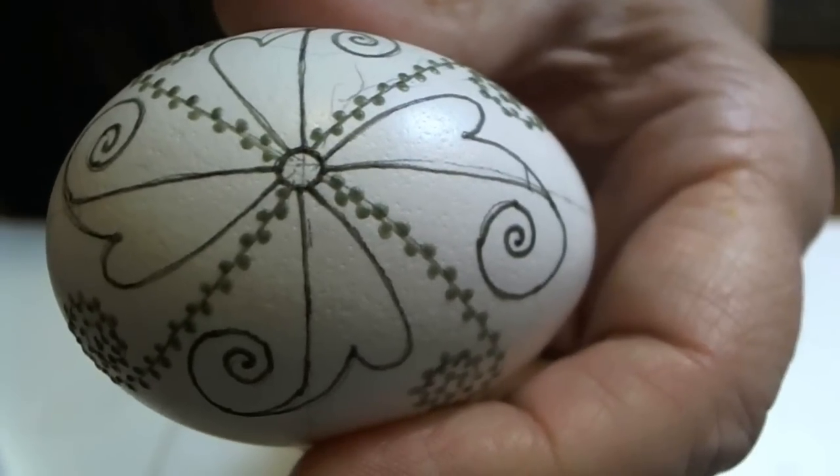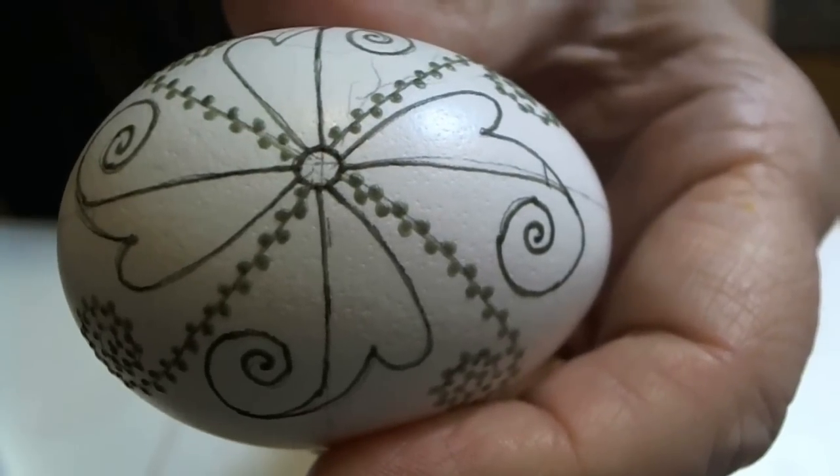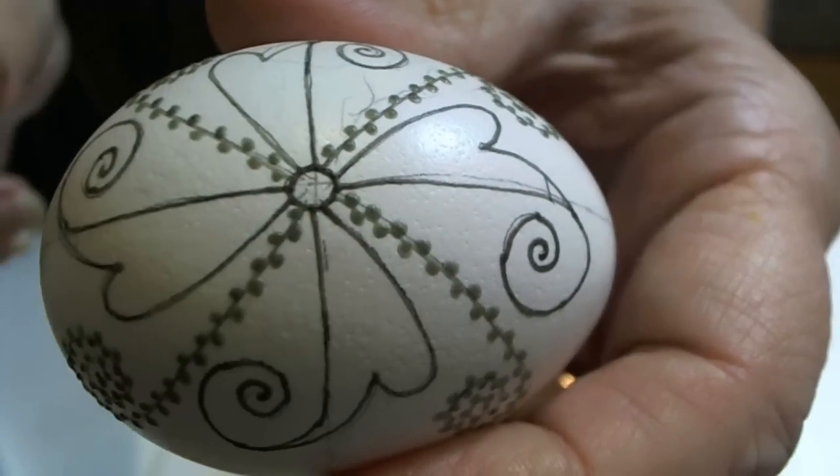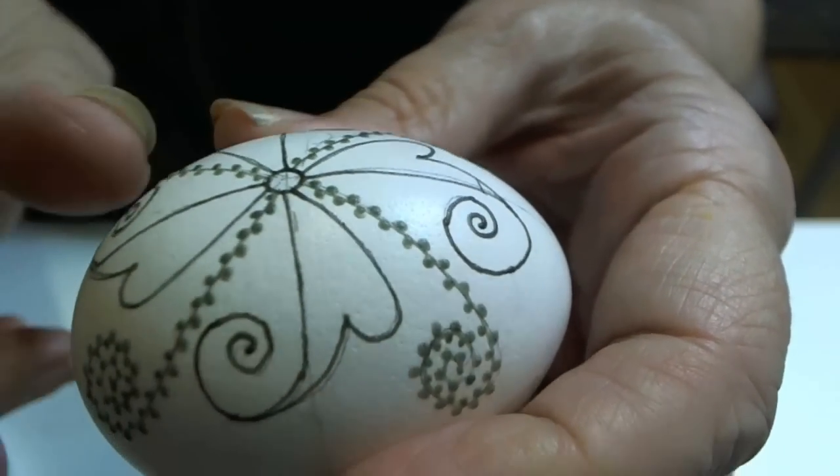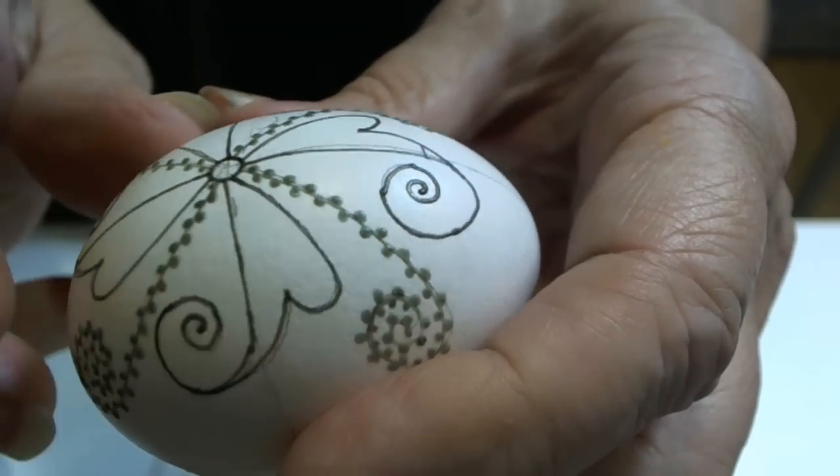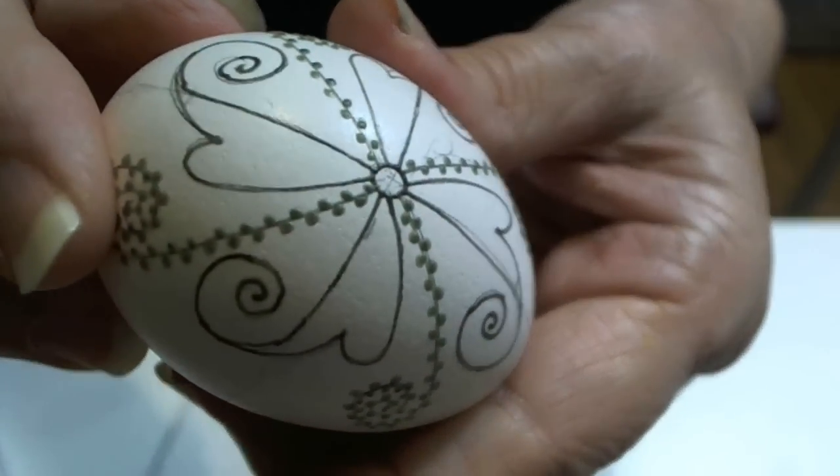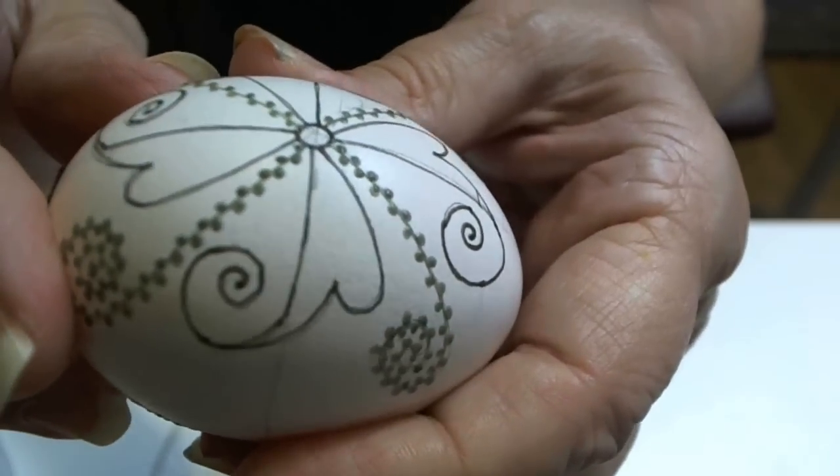Now that we've waxed in all the areas that we want white, we need to take a look at the egg and see that we have all the areas. Sometimes we get distracted and we miss a spot, but before we put the egg in the dye, this is the time to look it over and make sure we've got it all.